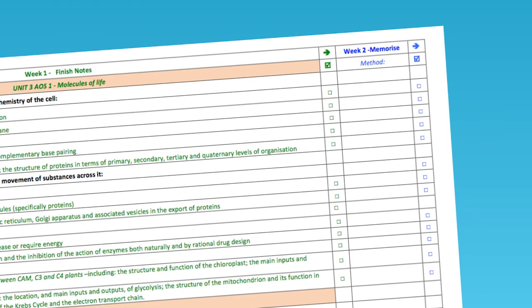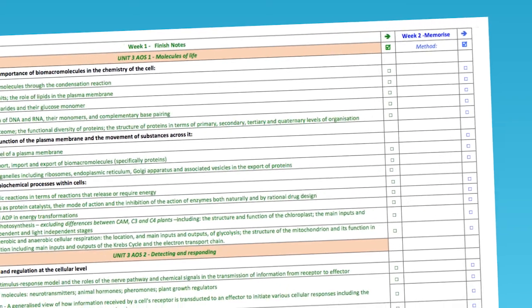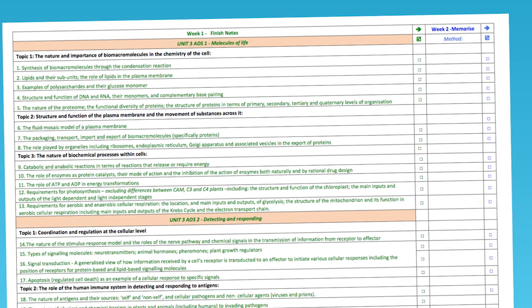This lines up directly with each topic in the first column of the planner. I want you to write in a brief description of the method that you use to memorise each topic and tick it off when you're done. For example, last episode you saw that we drew a picture for hormones, so next to hormones in column two, just write 'picture' or draw a little picture of a traffic light.